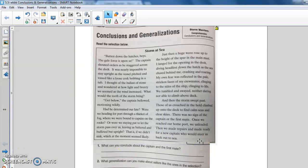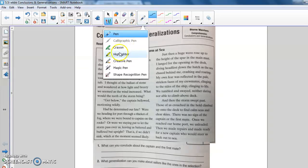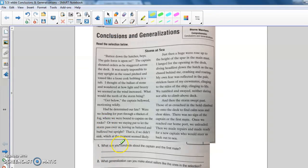Okay, so let's take a look at number one. It says, what can you conclude about the captain and the first mate? So looking at that question, highlighting key words, you're going to conclude, which is the same thing as making an inference or drawing a conclusion, not drawing a picture, but pulling things together to draw a conclusion about the captain and the first mate.